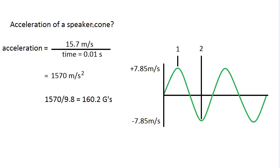So if we put them all into the equation, we find that the change in velocity, 15.7 meters per second, over the time of 0.01 seconds, we get an acceleration of 1,570 meters per second squared, which is roughly 160 Gs.